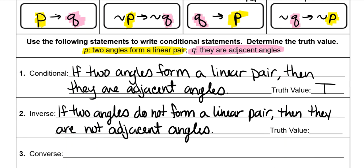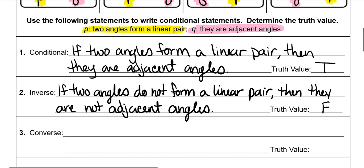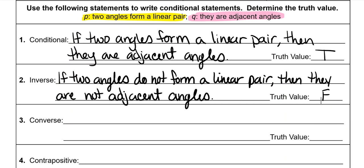Is this one true or false? If two angles do not form a linear pair, then they are not adjacent angles. Well, that's not true because you can have adjacent angles that aren't linear pairs — you can have an angle that looks like this, where they are adjacent angles but they definitely don't form a straight line. So this one is false.